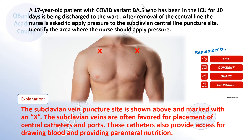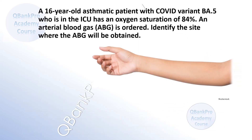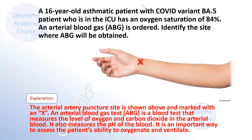A 16-year-old asthmatic patient with COVID variant BA5 who is in the ICU has an oxygen saturation of 84%. An arterial blood gas is ordered. Identify the site where the ABG will be obtained. The arterial puncture site is shown above and marked with an X. An arterial blood gas test measures the level of oxygen and carbon dioxide in the arterial blood, as well as the pH of the blood. It is an important way to assess the patient's ability to oxygenate and ventilate.